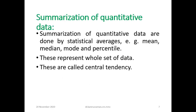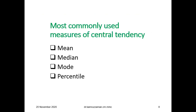Summarization of quantitative data is done by statistical averages, for example mean, median, mode, and percentile. These represent the whole set of data and are called measures of central tendency. Most commonly used measures of central tendency are mean, median, mode, and percentile.